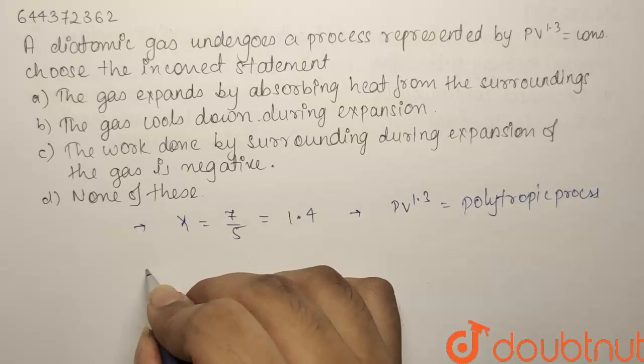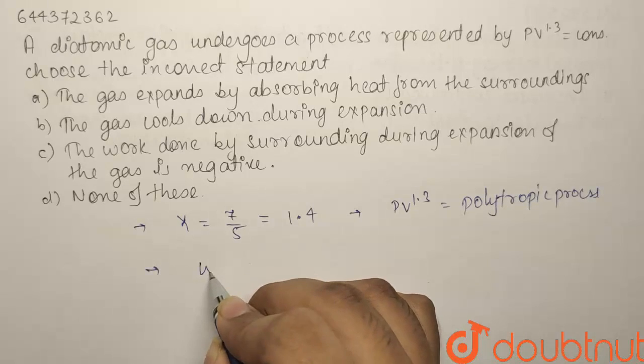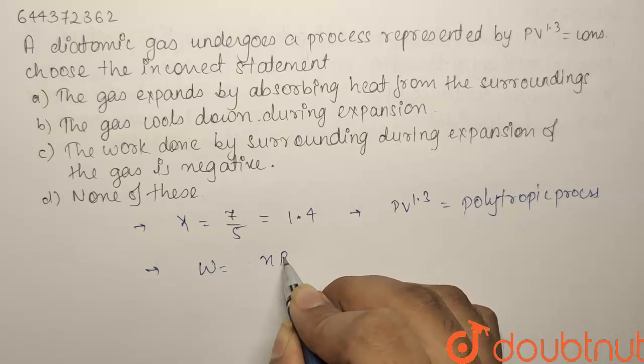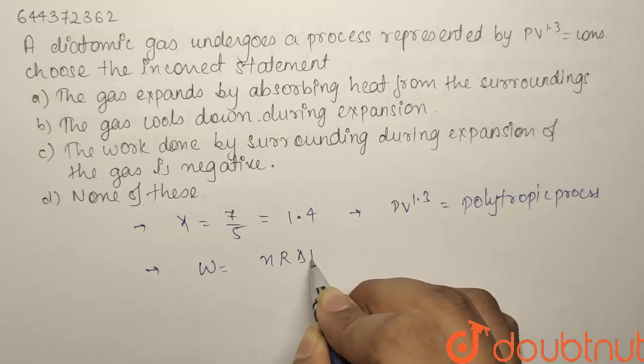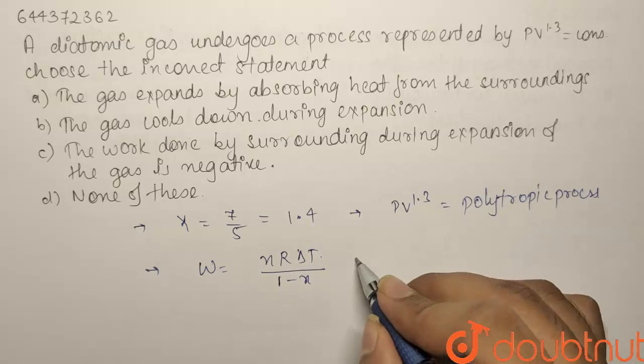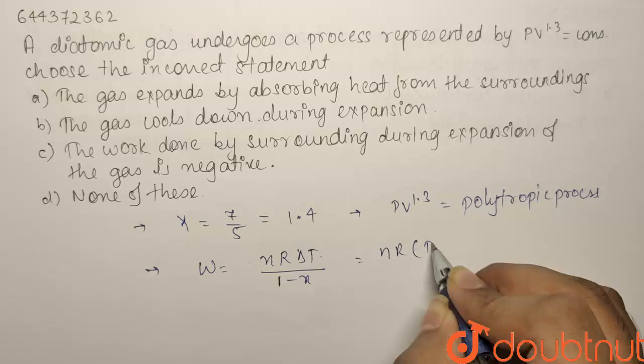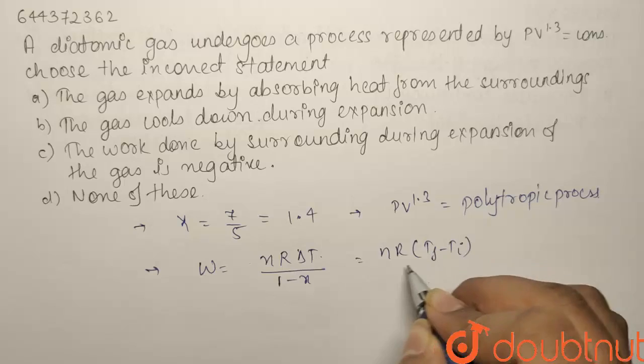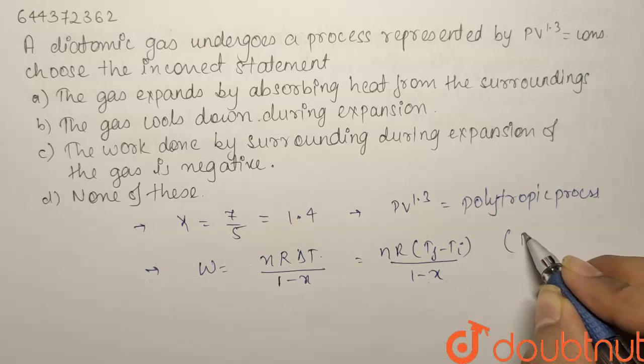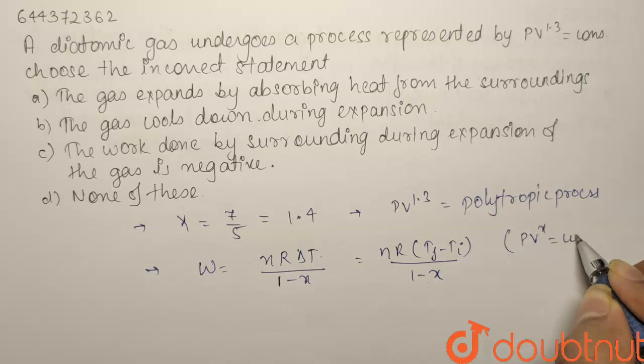Now, one of the most important formulas of polytropic process is the work done in polytropic process. And it is given by nR delta T upon 1 minus X. This is the amount of work done that is nR into T final minus T initial upon 1 minus X where the equation is given by PV to the power X equals to constant.